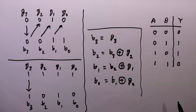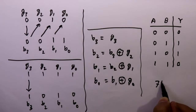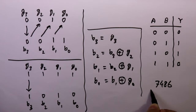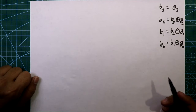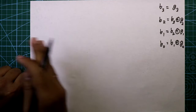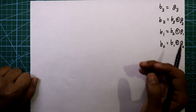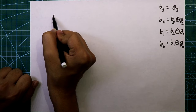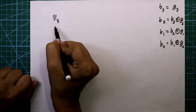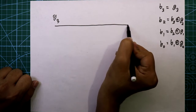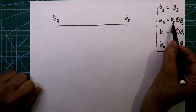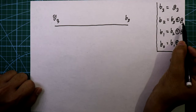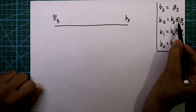For the XOR function we'll use IC 7486, which is an XOR IC. As we have to convert gray code to binary code, our input will be g3, and g3 is equal to b3. Now b2 is equal to b3 XOR g2, so we need an XOR gate here.